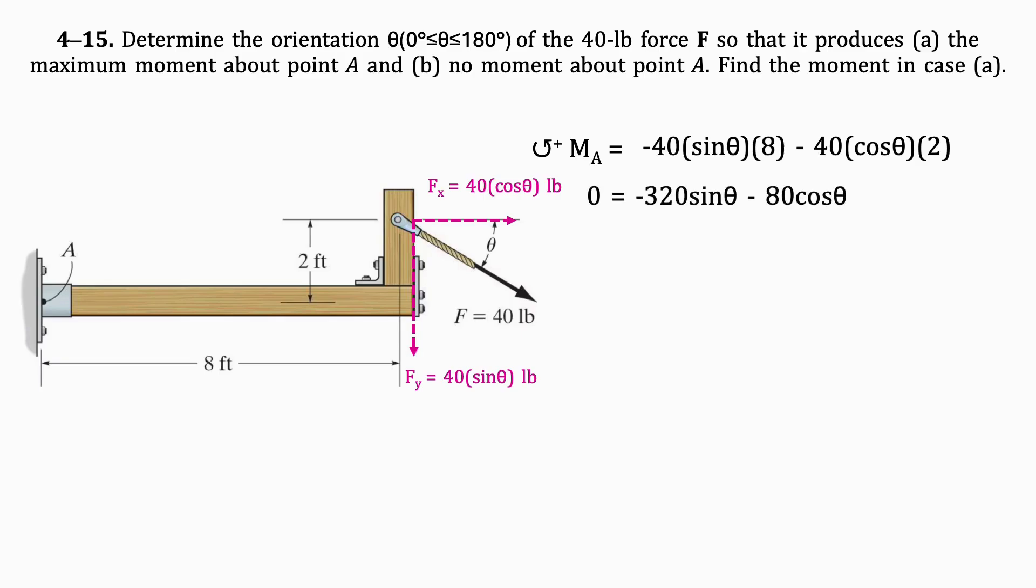We will set this equation equal to 0 to find the angle that generates a maximum moment. By rearranging this equation to get sine theta over cosine theta, which can be further simplified to tan theta, we get that tan theta equals negative 0.25. Taking the tan inverse of 0.25, we get negative 14.036 degrees.